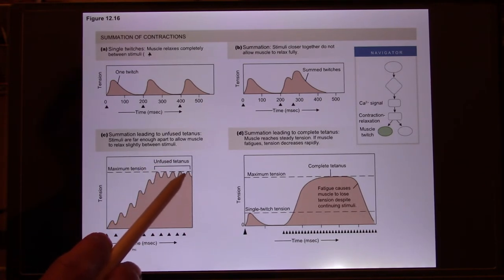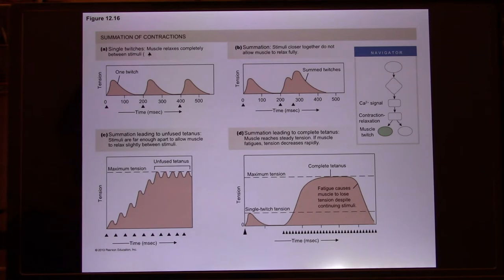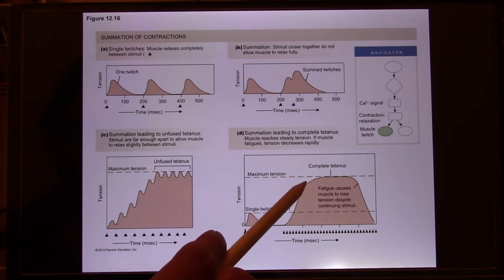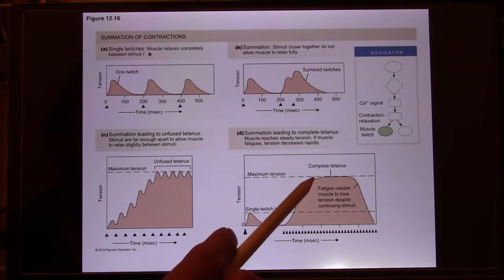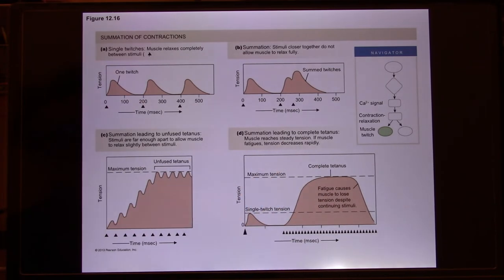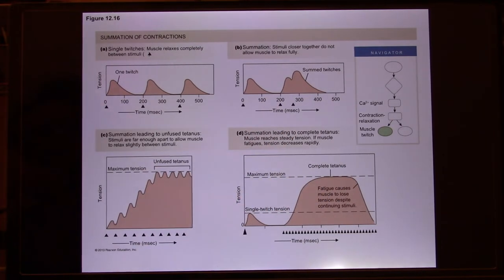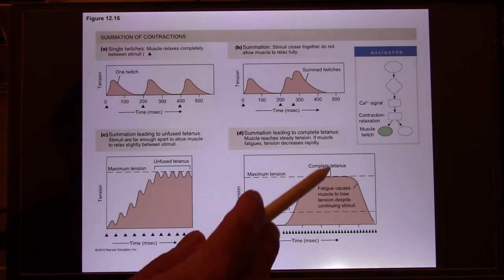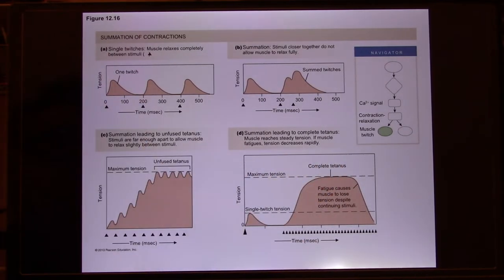Once you reach tetanus, you only have muscle contraction, no relaxation. You can make it worse — called complete tetanus — where the muscle doesn't even bother to relax; it only has contraction. If this happens, I believe you've all experienced it in your life: muscle cramp. When you have a muscle cramp, your muscle contracts and you cannot relax it, because all the muscle has reached contraction with no relaxation.